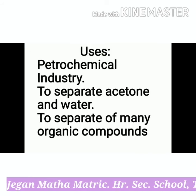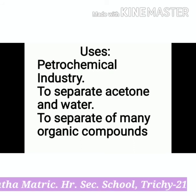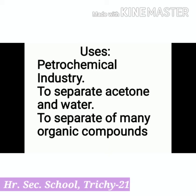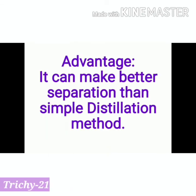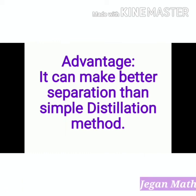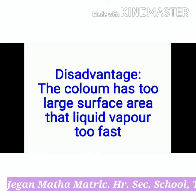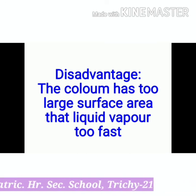Uses of fractional distillation: it is used in the petrochemical industry to obtain different fractions of petroleum, to separate different gases from air, and to distill alcohol. It is also used for purification of water and separating acetone and water, as well as separating many organic compounds. Advantages include better separation than simple distillation, even when boiling points of each component are close. A disadvantage is that the column has too large a surface area, which can cause vapor to escape too fast.